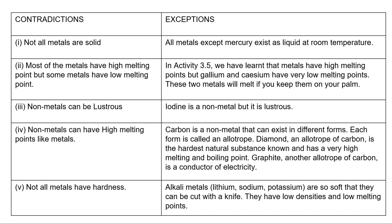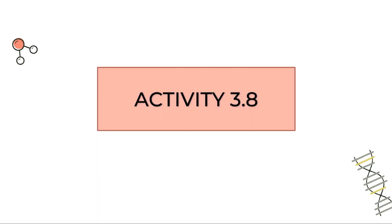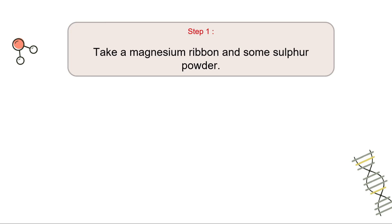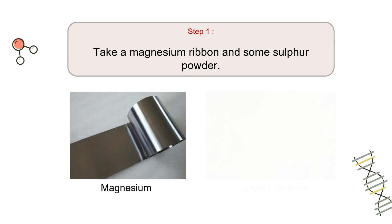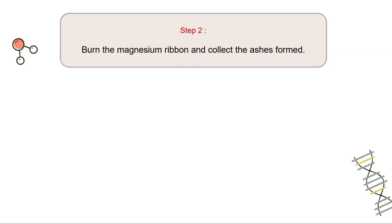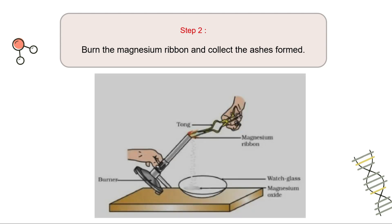Alkali metals also have low densities and low melting points. Coming back to our topic — physical properties of non-metals — we will continue with Activity 3.8. This activity asks us to take a magnesium ribbon and some sulphur powder. The next step is to burn the magnesium ribbon and collect the ashes formed. You can see on screen a diagram of how to burn the magnesium ribbon.